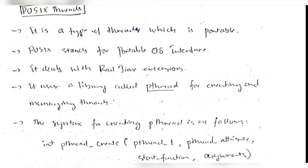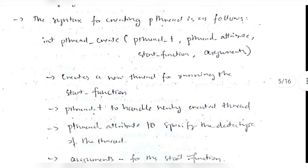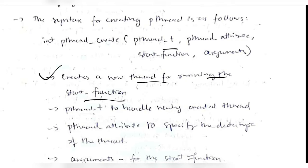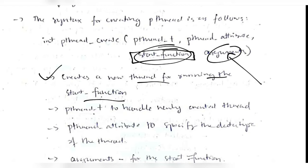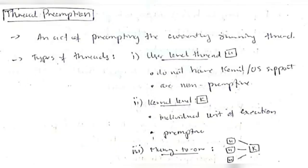POSIX is one type of thread used in Operating Systems. It is portable — the full form is Portable OS Interface — and is used for real-time extensions in RTOS. It uses a library called pthread for creating and managing threads. The syntax for creating a thread has four parameters: pthread_t (handler for the new thread), pthread_attribute (data type), start_function (function to perform), and arguments (e.g., two numbers for addition). The function creates a new thread to run the start function.